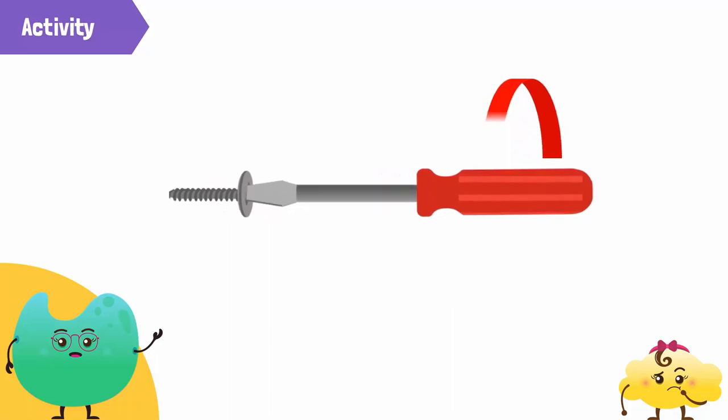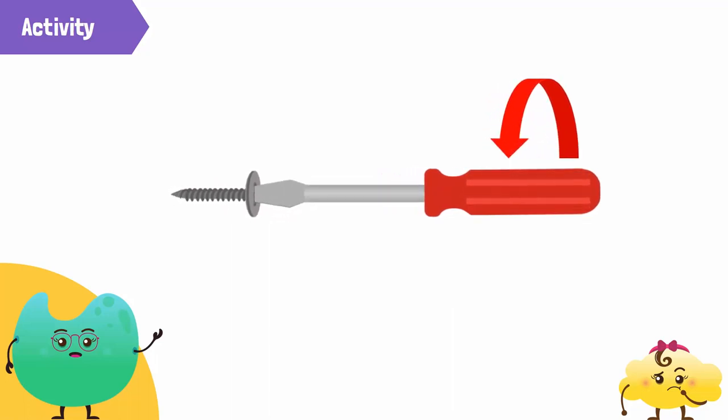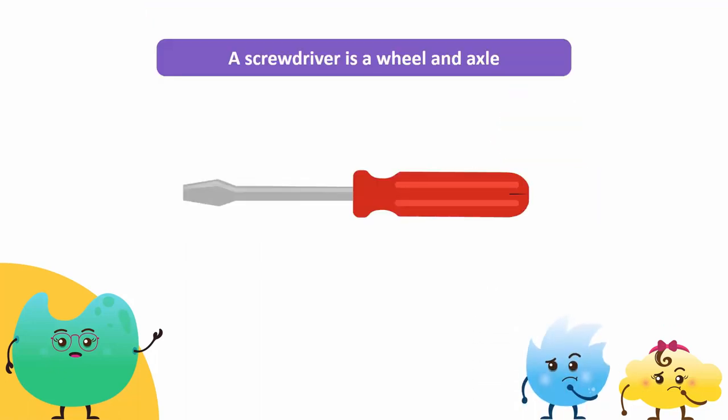It is easier to open the screw by rotating the handle of the screwdriver compared to opening it with the shaft. This is an example of the wheel and axle. The handle of the screwdriver is the wheel as its diameter is greater compared to the diameter of the shaft, while the shaft is the axle.